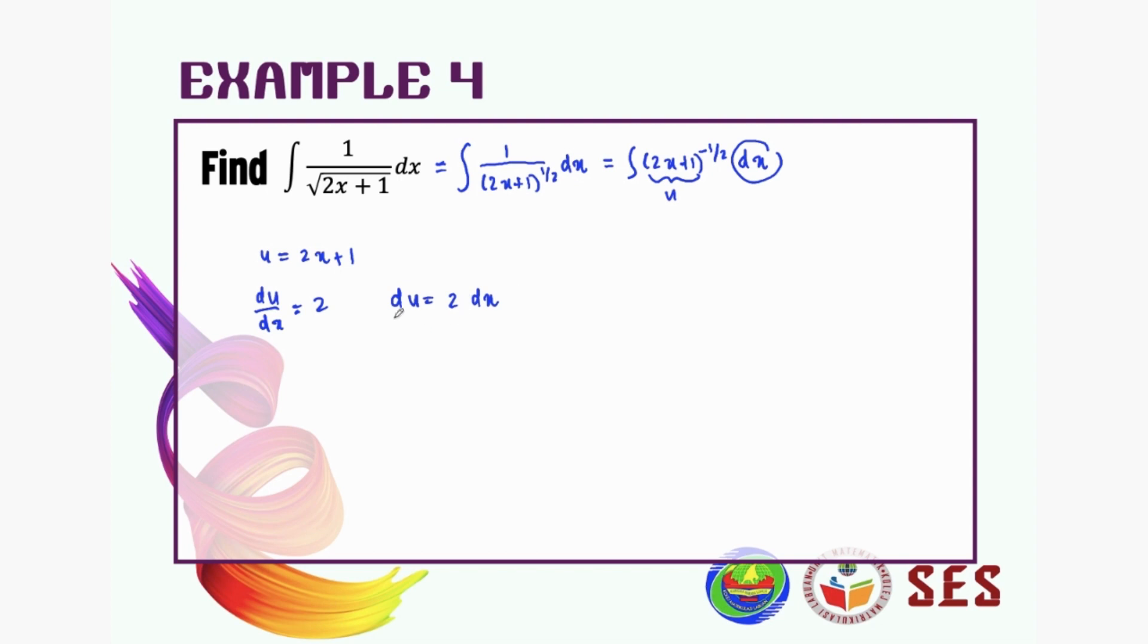So what we need to do for the number 2, we bring it to the other side, so it becomes 1 over 2 du equal to dx.